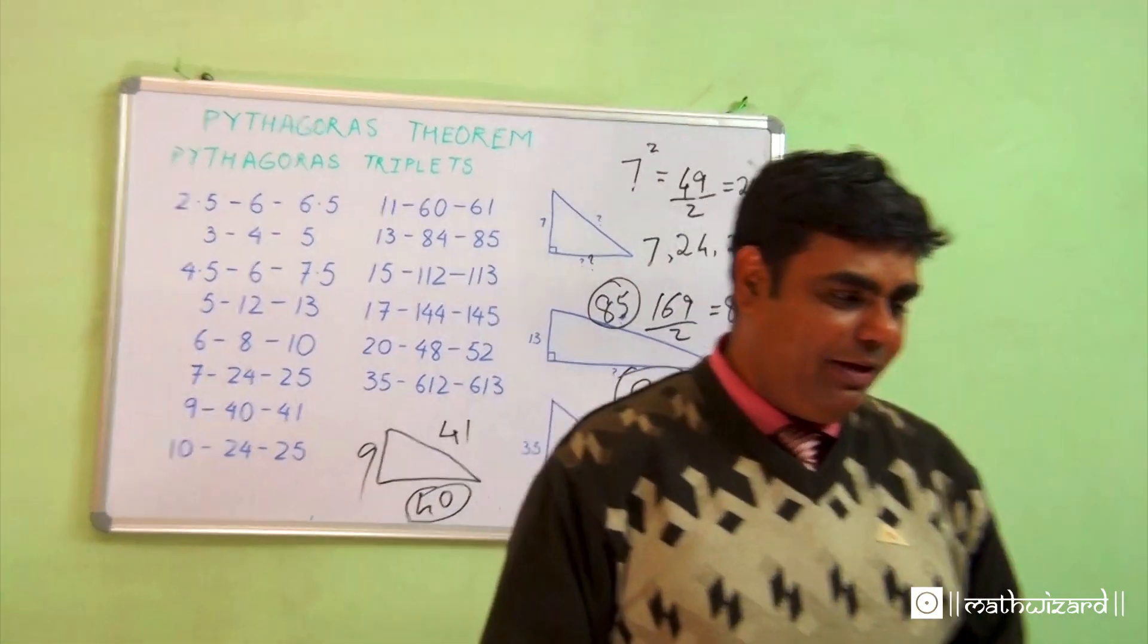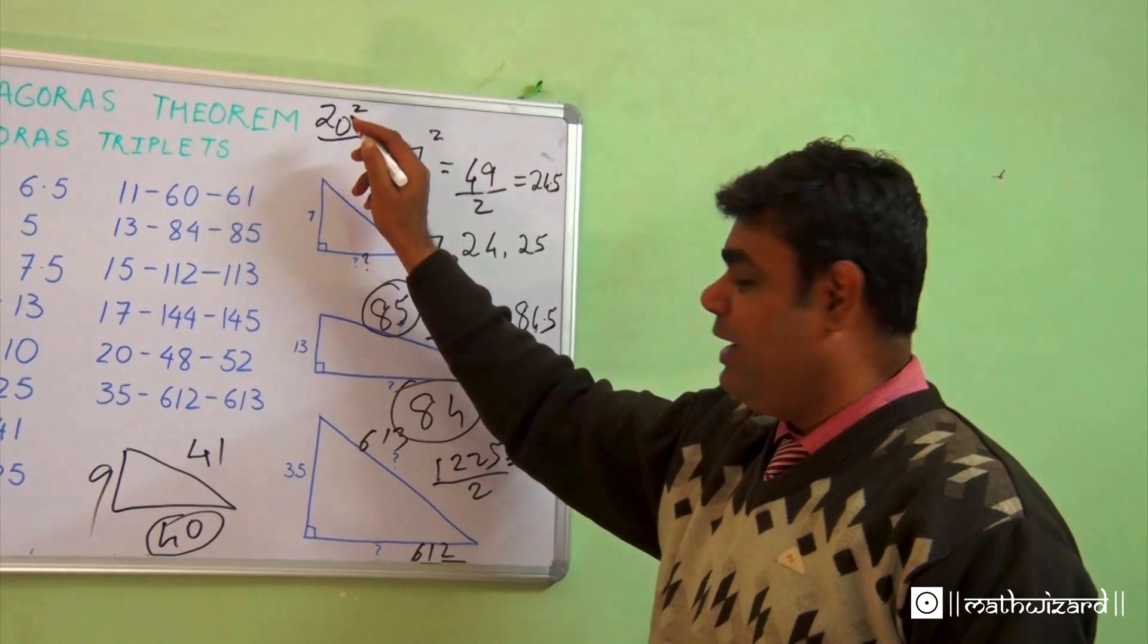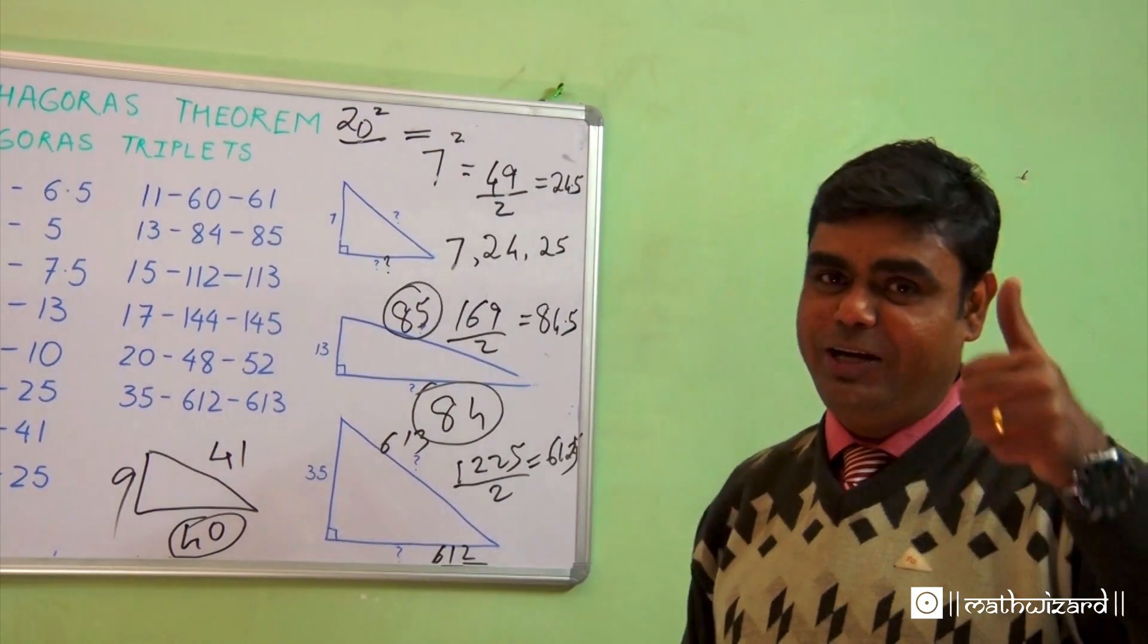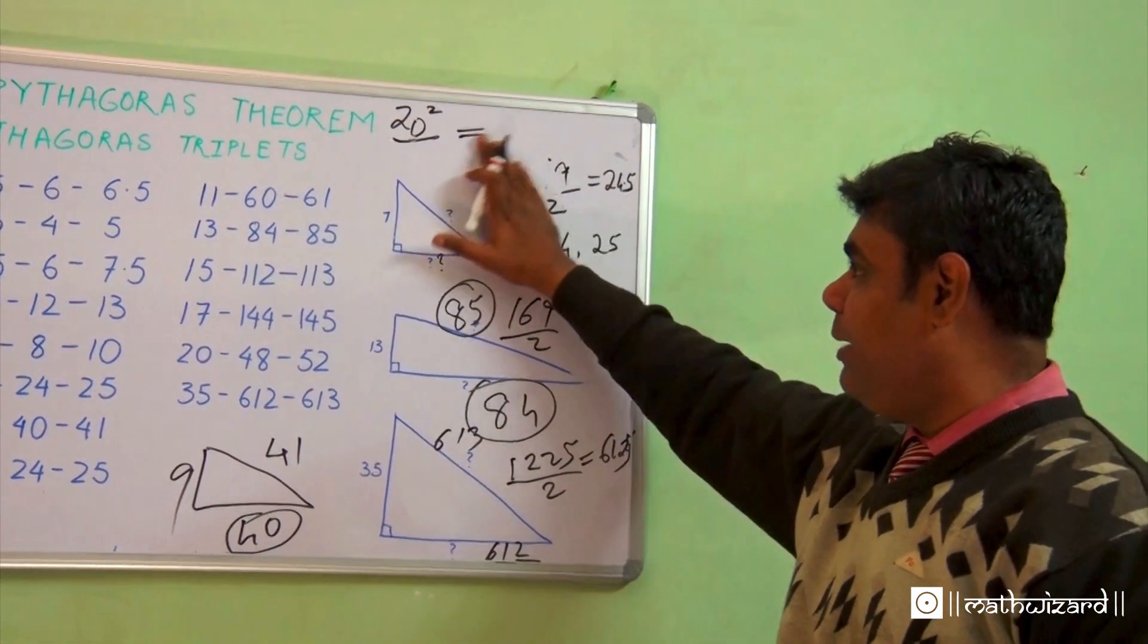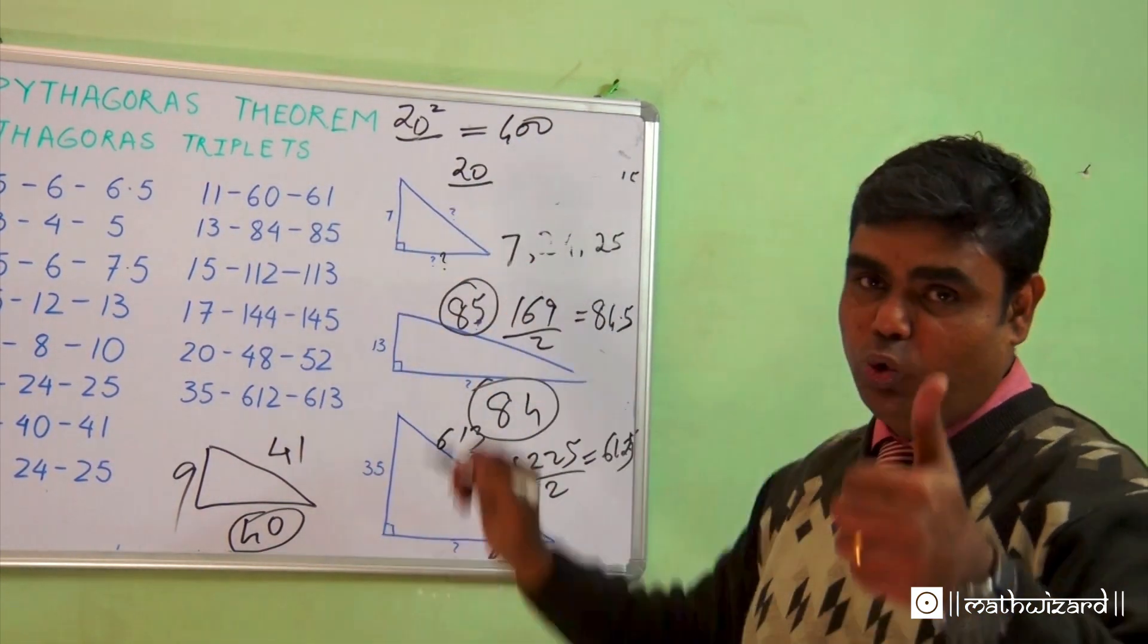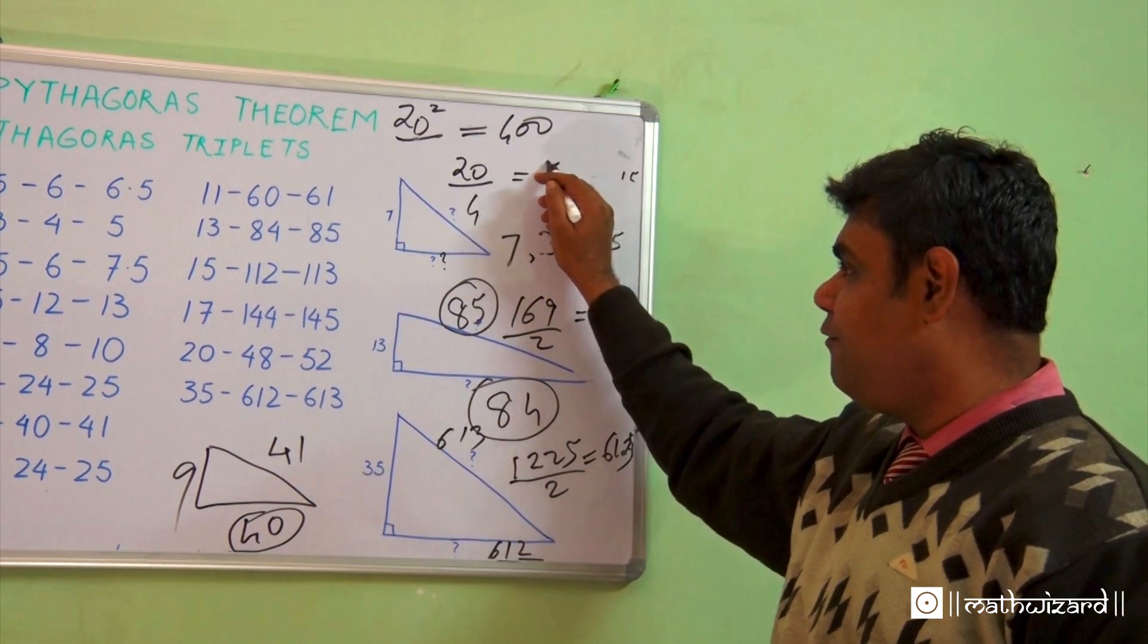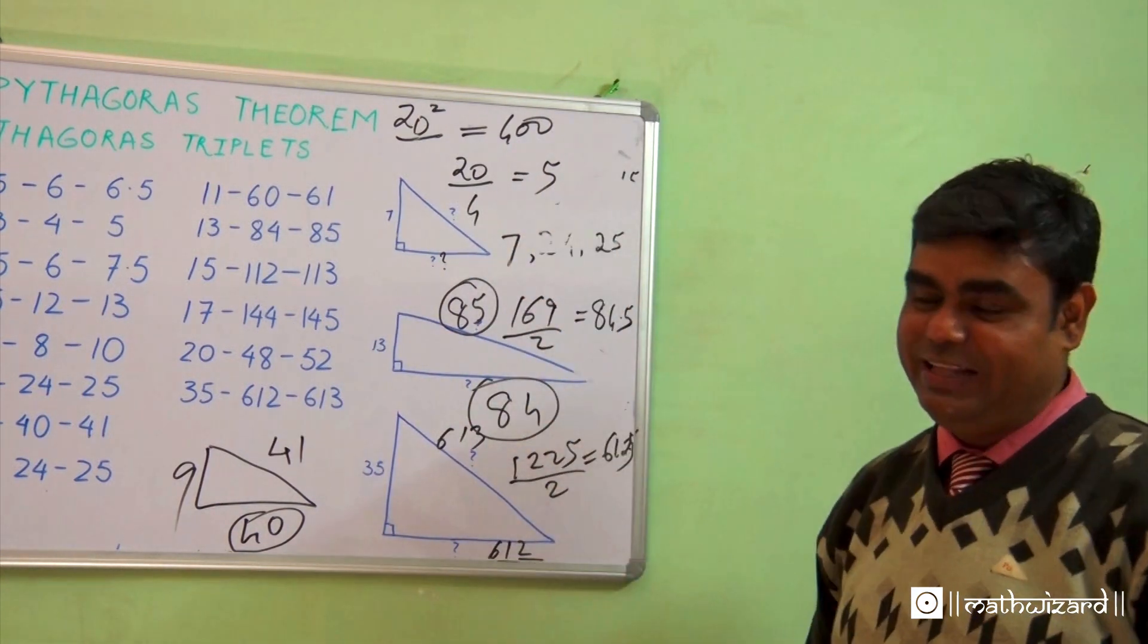Suppose the square is 20. 20 is an even number, so you have to divide it by 2, 4, 8, or 16 and make it an odd number first. 20 square gives 400, but this is of no use. So what should I do? Divide this by 2, 4, or 8. If I divide by 4, I get 5. Now from here I do the same thing and I can get the answer.